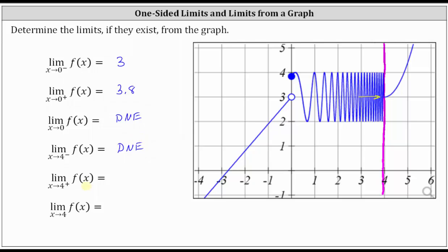Next, we have the limit of f of x as x approaches four from the positive side or right side, which means now we're approaching positive four from values greater than four, from this direction here. As we get closer and closer to positive four from the right, notice how we are approaching the y value or function value of three. The limit of f of x as x approaches four from the right is equal to positive three.